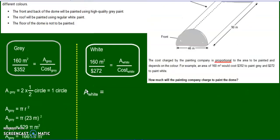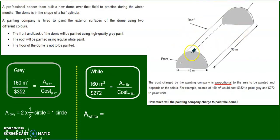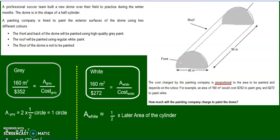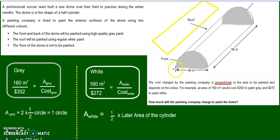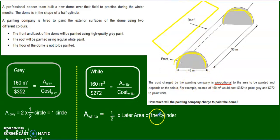Now let's go back and find the cost of the white part, which is half a cylinder. So the area of the white is half the lateral area of a cylinder. I can think of it as opening the cylinder up — it's basically a rectangle. This measurement would go around the dome, so it would be half the circumference, and the other side is the length.